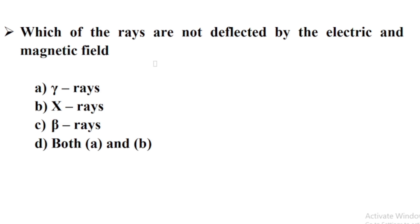Which of the rays are not deflected by the electric and magnetic field? Option D: Both A and B. Option A: Gamma rays. Option B: X-rays.